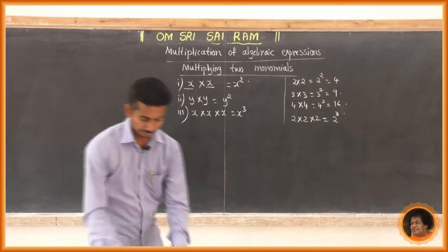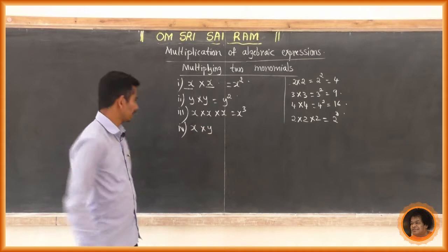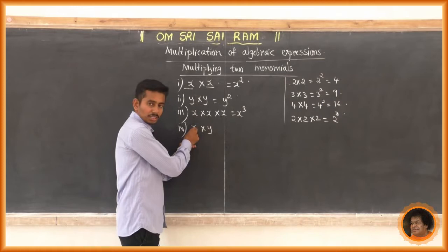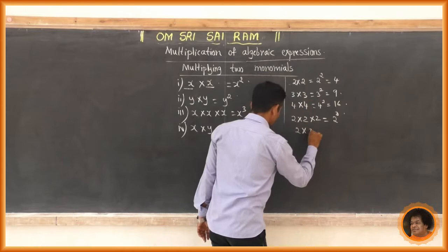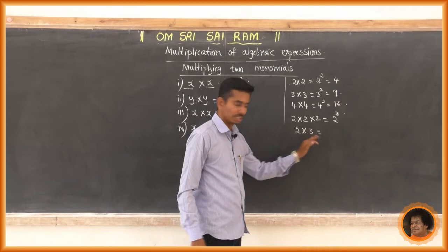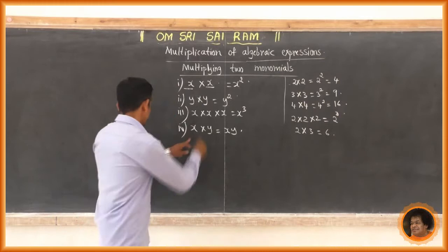What is the product of x and y? Product means multiplication, so x into y. The variables are different — one is x, another is y. Just as 2 into 3 gives 6, x into y gives xy. x into y is x to the power 1 times y to the power 1, so we write it as xy.